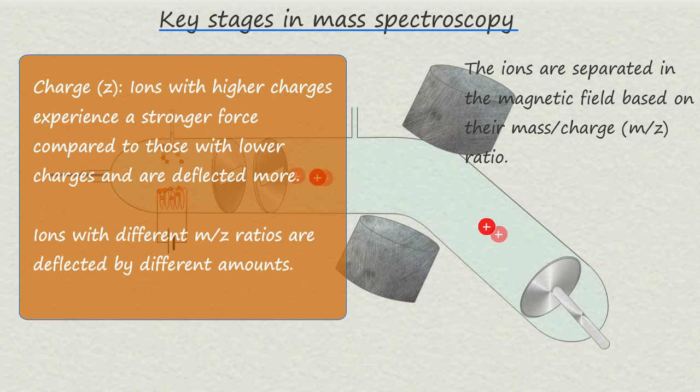Now we can simply combine these two factors and say that the amount of deflection experienced by an ion depends on their mass to charge ratio.